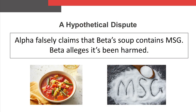To see how found data can be helpful, let's consider a hypothetical dispute between two soup makers, Company A, Alpha, and Company B, Beta. In May of 2022, Alpha falsely stated that Beta soup contains MSG. In its complaint, Beta alleges that it's been harmed by Alpha's false statements.